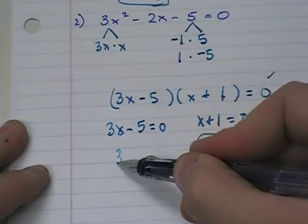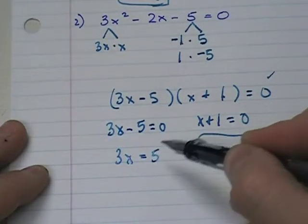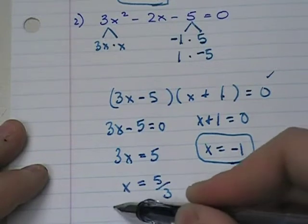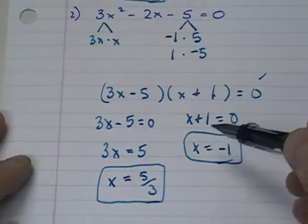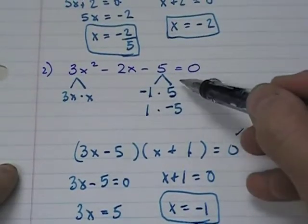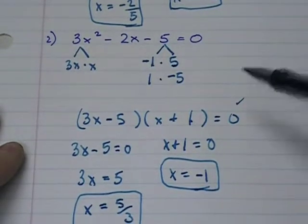Here, move the 5 over. You get 3x equals 5. x equals 5 thirds. So those two answers will make the original problem a true statement. I always like to plug in one of these.